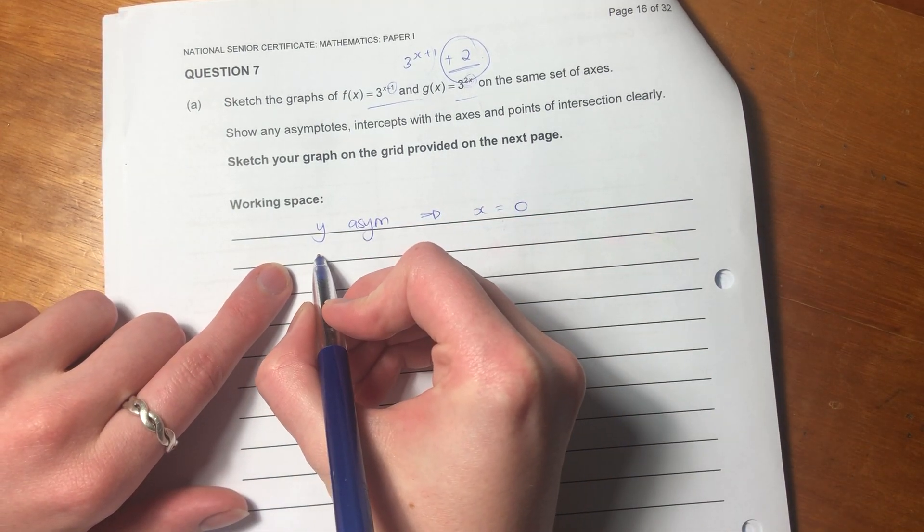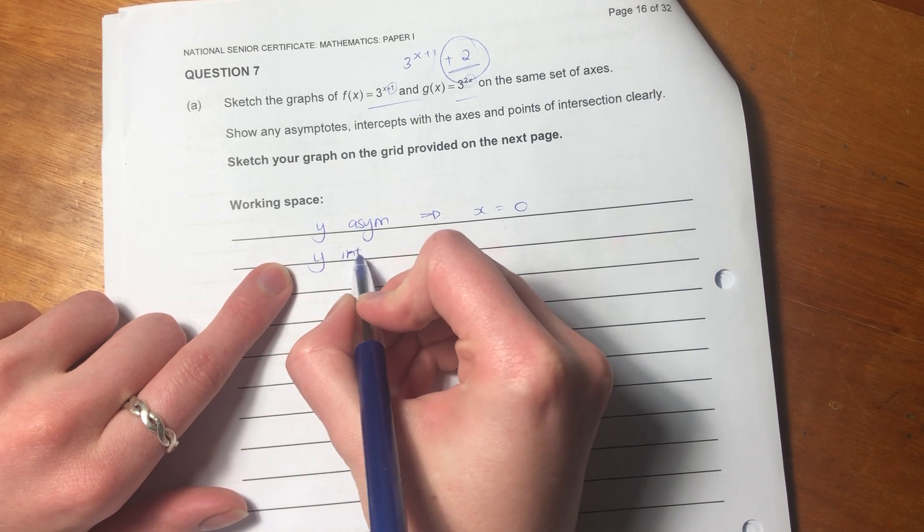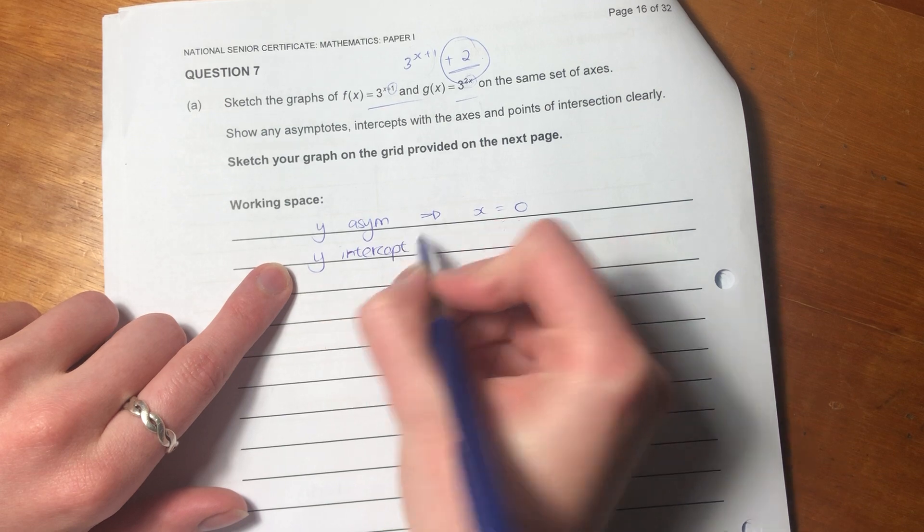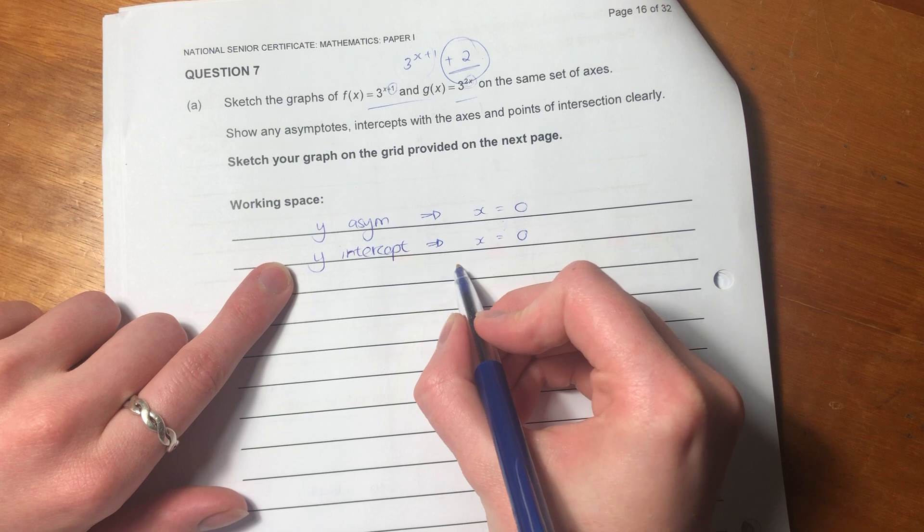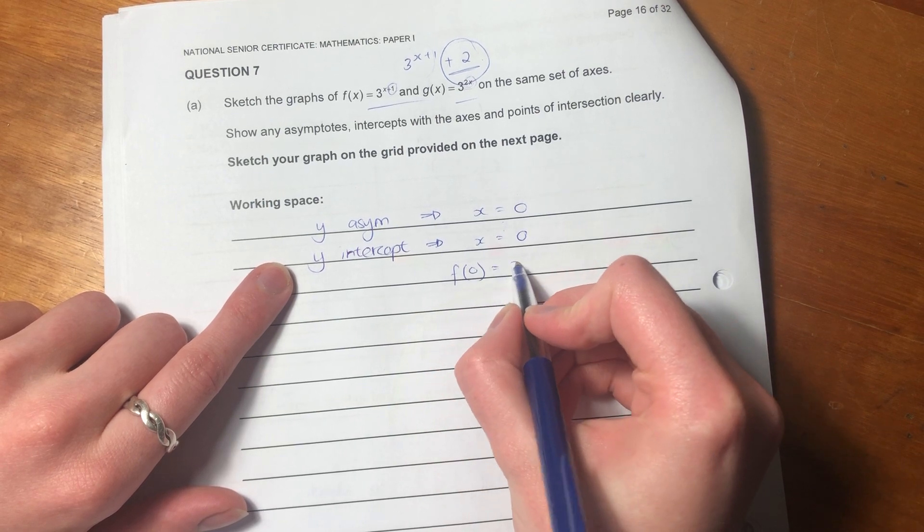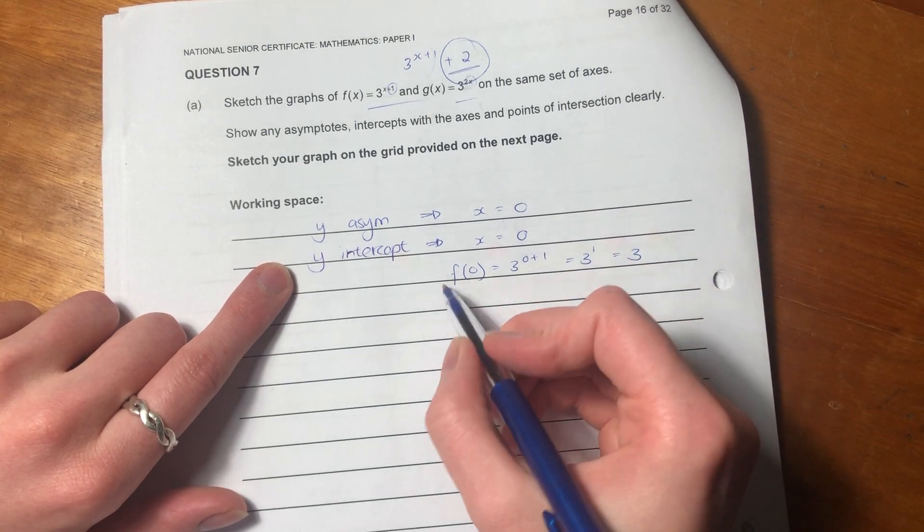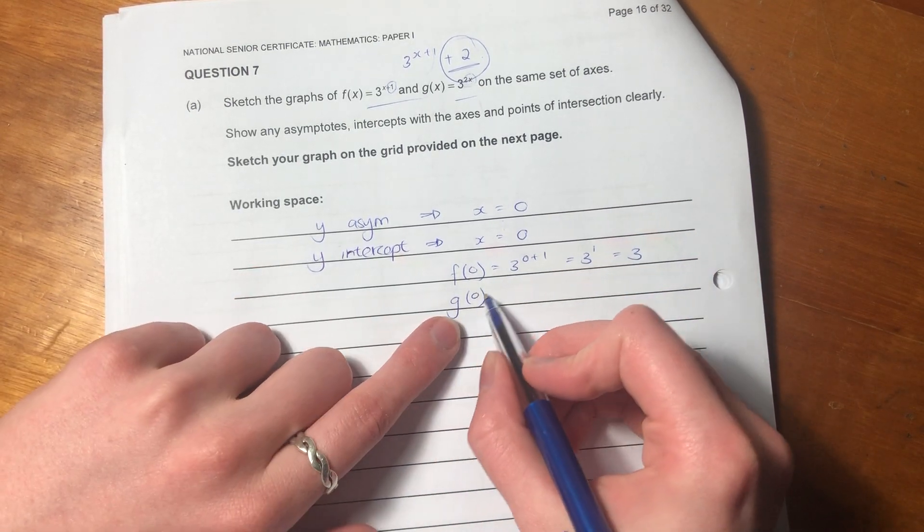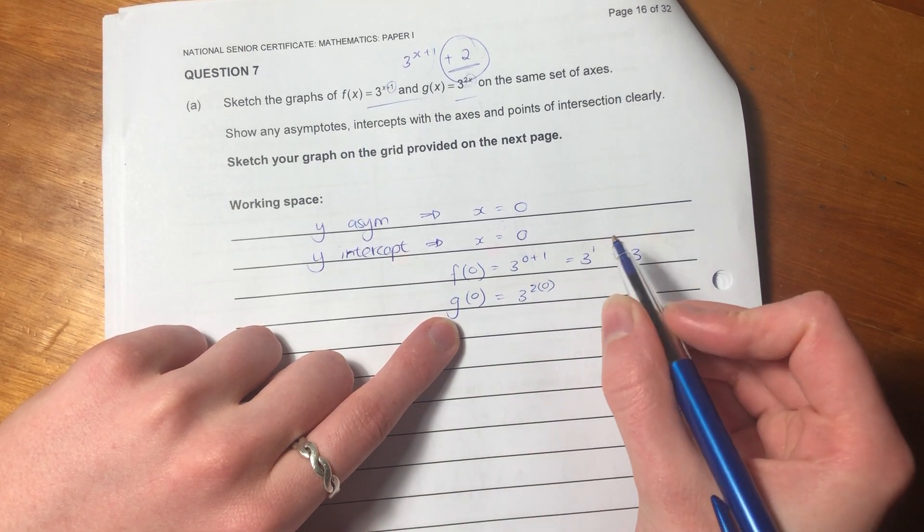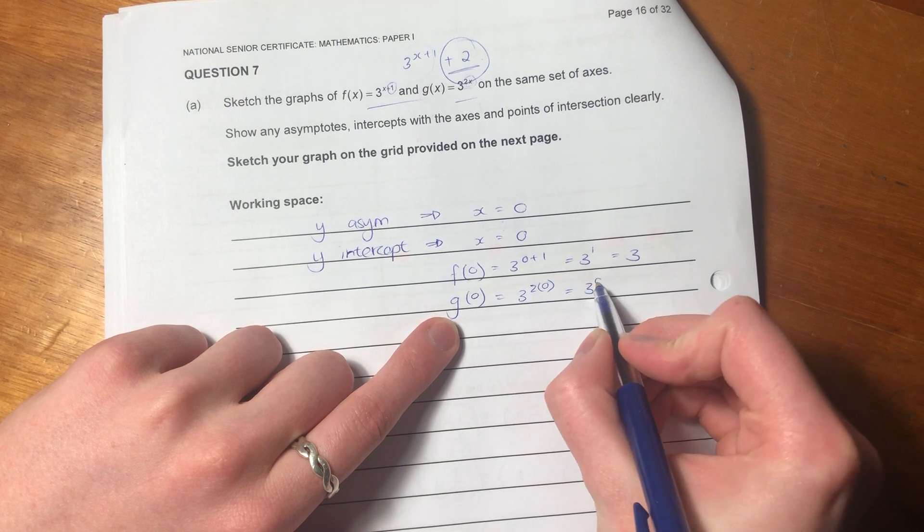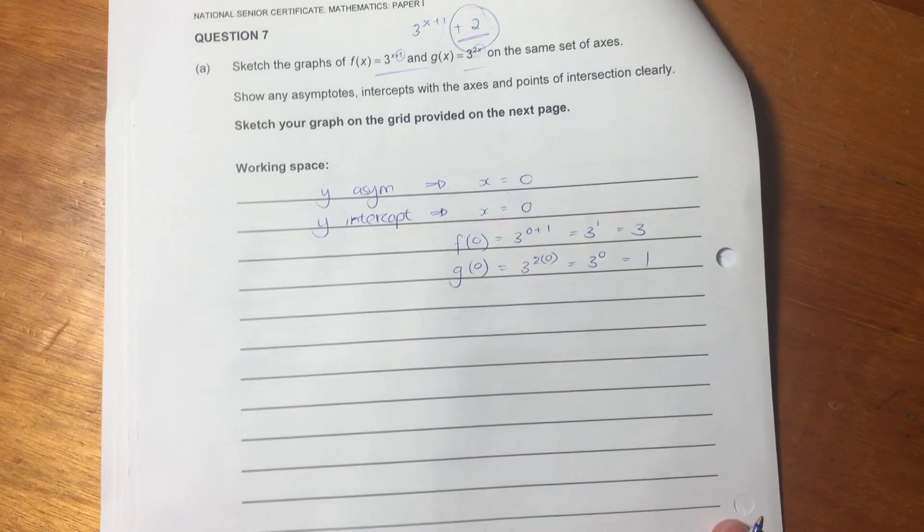Then let's get the y-intercept for both of them. So we know the y-intercepts where x equals zero. So if we have f(0), 3^(0+1), so that's going to be 3 to the 1. So that's that. And for g at 0, we have 3 to the power of two times by zero, which would be 3 to the power of zero, which equals 1. Anything to the power of zero always equals one. Okay, perfect.